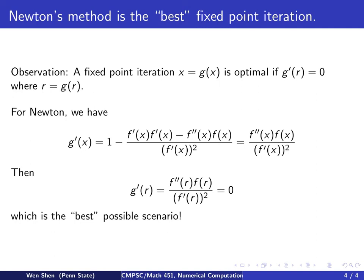Then evaluate g prime at r, what do I get? Will be exactly this expression, plugging x equal to r. Since f prime at r is not 0, and f of r is 0, this expression equals to 0. Therefore, Newton's method is the best fixed point iteration.